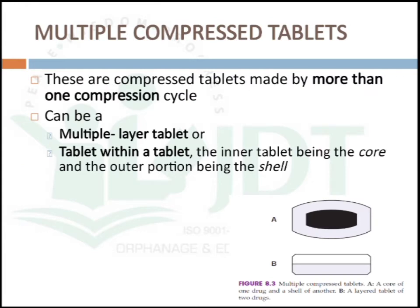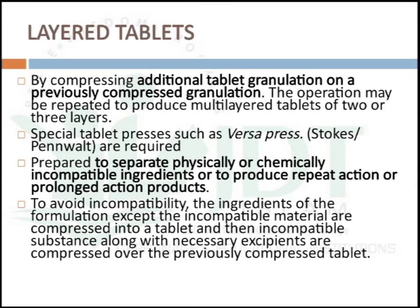The second group of orally ingested tablets is multiple compressive tablets, made by more than one compression cycle, forming either multiple layer tablets or a tablet within a tablet — an inner core tablet with an outer shell. Layered tablets are prepared by compressing an additional tablet granulation on a previously compressed granulation, and the operation may be repeated to produce multiple layer tablets of two or three layers. Special tablet presses are required for preparation of layered tablets.